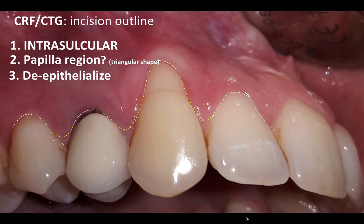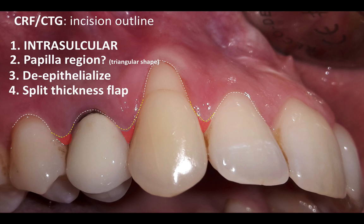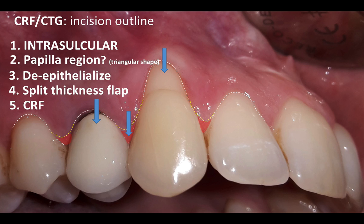Step three is to depithelialize the interproximal tissue — either by using a number 15 blade or a microblade. I don't recommend using diamond burs, as was suggested in the past. I get the best results by using a conventional blade and removing a very thin layer of epithelium. This will allow you to take your split-thickness flap and reposition it coronally. The key is to have a flap mobile enough to cover the receding roots with total passivity, requiring quite a bit of releasing in the apical part of the flap in the periosteum.